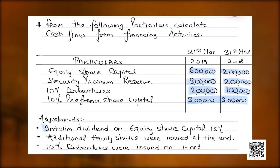Let us start this question. We have a few adjustments: interim dividend on equity share capital is 15 percent, and this additional equity was issued at the end of the year. That means this issue of 4 lakh rupees was done at the end of the year, so the whole year we had just 2 lakh rupees and we have to provide dividend on this figure only, because shares were issued at the end of the year.